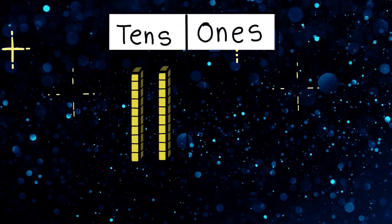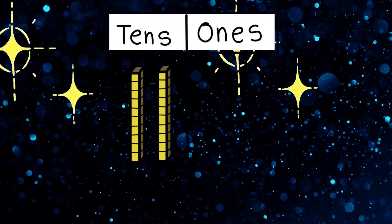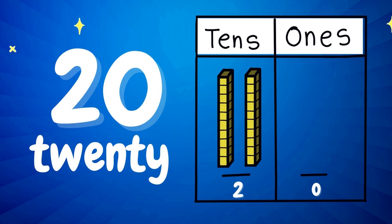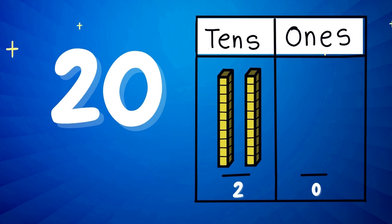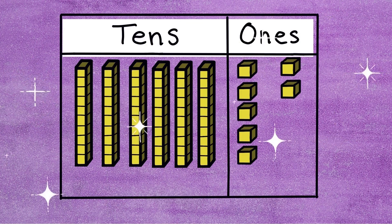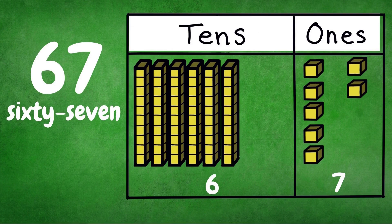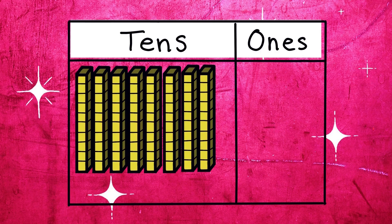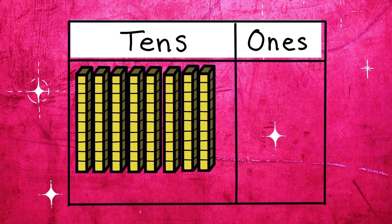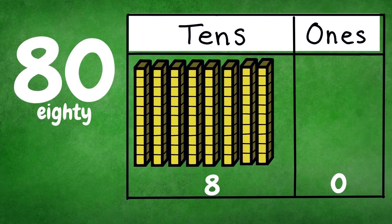Next number. It has two digits: 2 tenths and 0 ones. Which number is it? Number 20. Next number. It has two digits: 6 tenths and 7 ones. Number 67. Good job. Next number. It has two digits: 8 tenths and 0 ones. It's number 80. Good job.